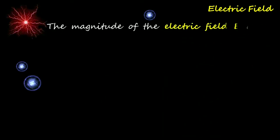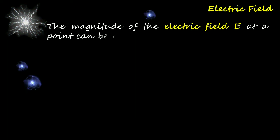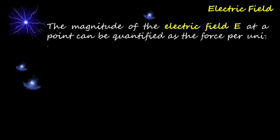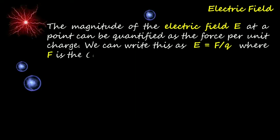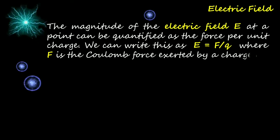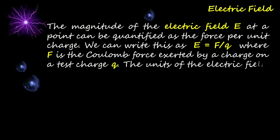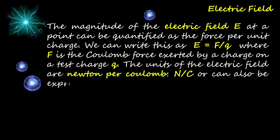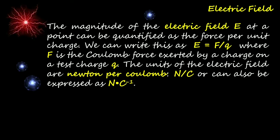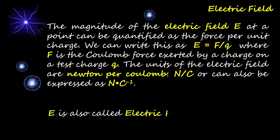The magnitude of the electric field E at a point can be quantified as the force per unit charge. We can write this as E = F/Q, where F is the Coulomb force exerted by a charge on a test charge Q. The units of the electric field are newtons per coulomb, in symbols N/C, or can also be expressed as NC⁻¹. E is also called electric field intensity.